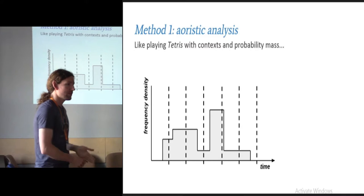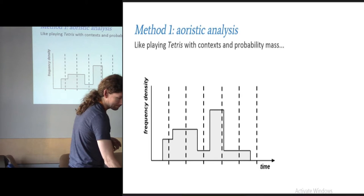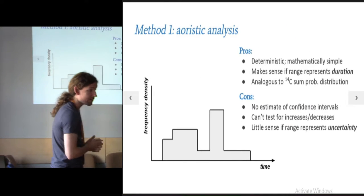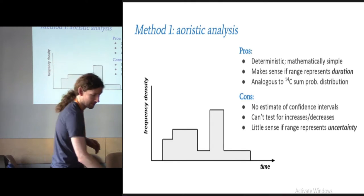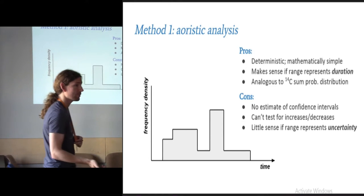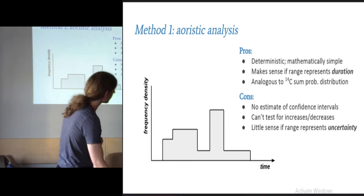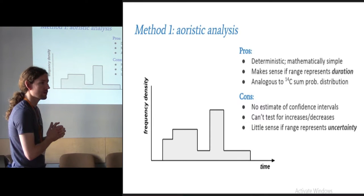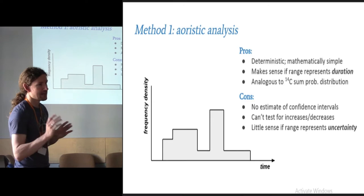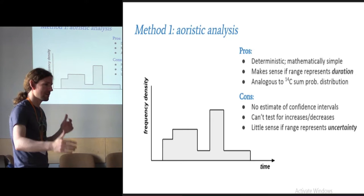Then what you do probably for practical purposes is you chop it up into bins, and you actually end up presenting the data as a histogram. The advantages of this are firstly that it is deterministic. Lots of people are much happier if you have an analysis that gives you the same result every time. It's mathematically quite simple. Computationally slightly less simple, but the actual underlying maths are extremely simple. And it makes a lot of sense if you assume that your date ranges are basically duration. So if you've got a context dated 1538 to 1666, if you assume that that means it formed continuously over that process, this kind of makes sense.